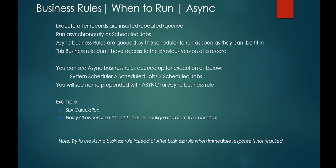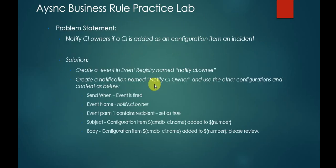Some examples of async business rules include SLA calculation. Another example could be notifying the CI owner when a CI is added as a configuration item to an incident. A good practice note: try to use an async business rule instead of an after business rule when an immediate response is not required.